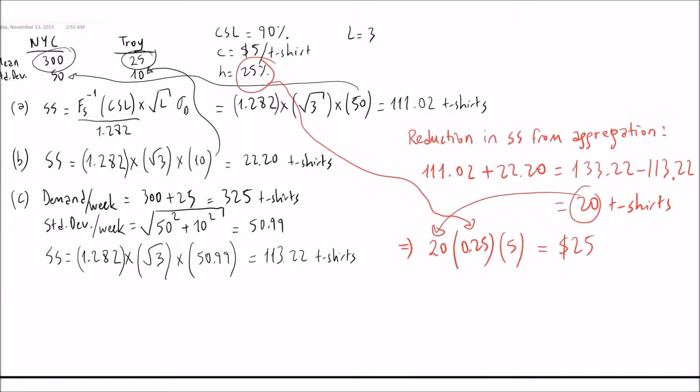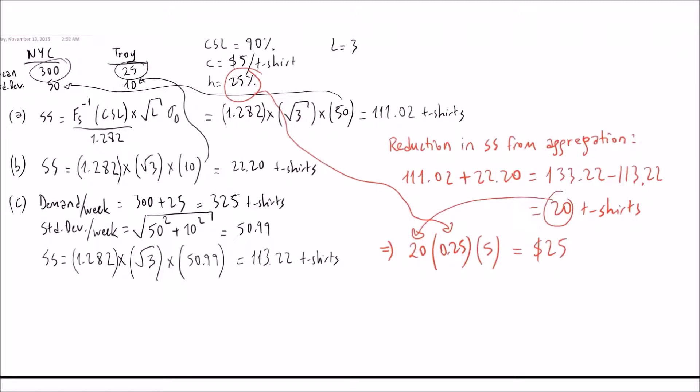So by aggregating the inventory, we save $25. In our case, since one t-shirt is $5 and the inventory holding cost is 25% of that, the savings seem small. But if you think about a company that sells items for $1,000, this aggregation would produce a much larger amount of savings.